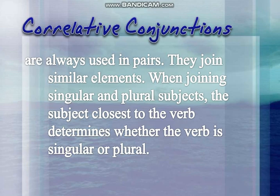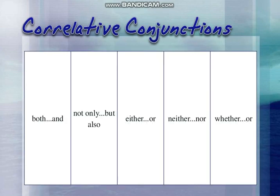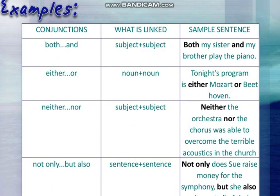When joining singular and plural subjects, the subject closest to the verb determines whether the verb is singular or plural. Examples of correlative conjunctions are: 'both...and,' 'not only...but also,' 'either...or,' 'neither...nor,' and 'whether...or.' These are correlative conjunctions. Let's see how they are used in sentences.